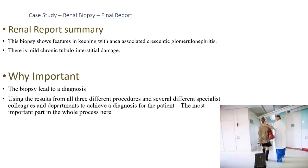In summary and conclusion, the biopsy showed features in keeping with ANCA-associated chronic glomerulonephritis with mild chronic tubulointerstitial damage. The biopsy led to a diagnosis for the patient by combining all information from the three stages: the haematoxylin and eosin stain, the special stains specifically the elastic van Gieson, the immunofluorescence with positive C3, and the electron microscopy showing foot process effacement. This, together with input from several specialist colleagues and departments, achieved a diagnosis for the patient — the most important part of the whole process.